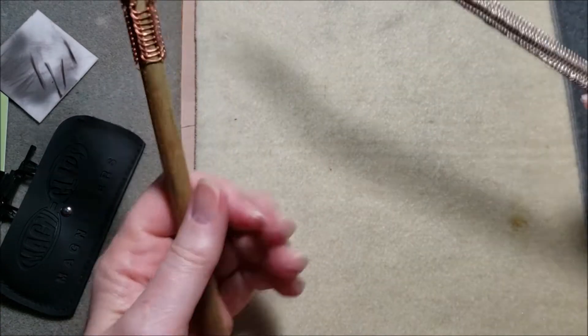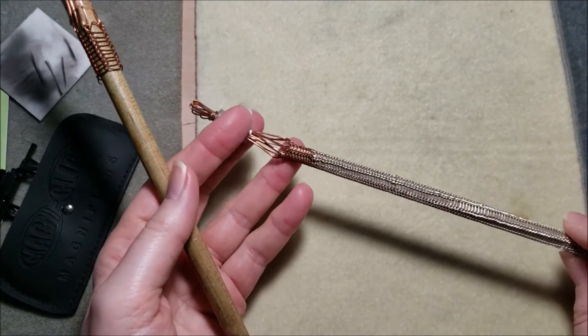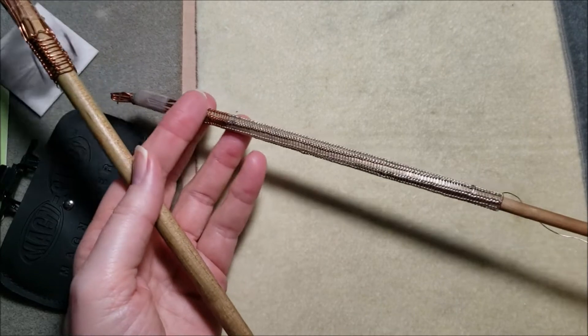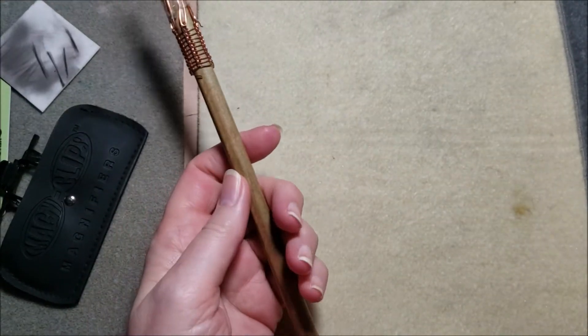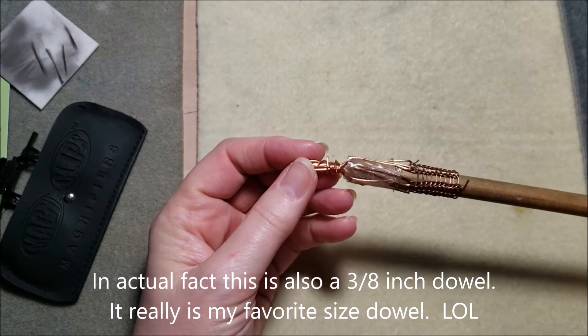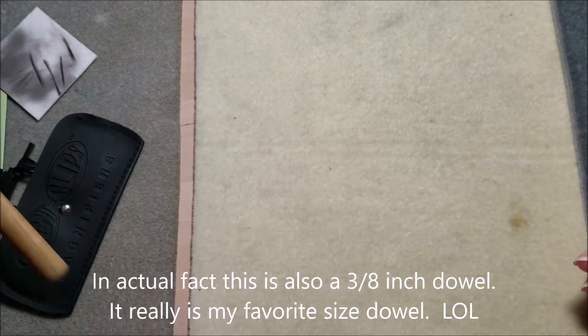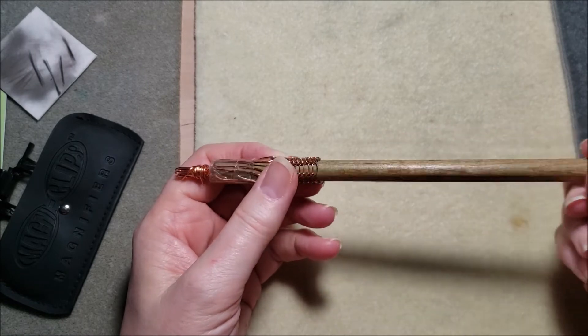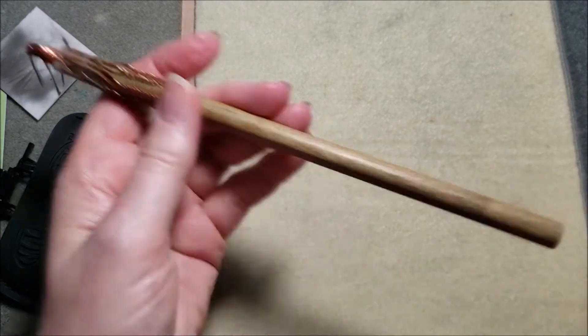You can do Viking wire knitting on other sizes of dowels. This is a 28 gauge sterling silver on a finer dowel, as you can see. And this is a 24 gauge copper on a slightly thicker dowel. And as you can see, it's very well used because it's gently changed color over time.